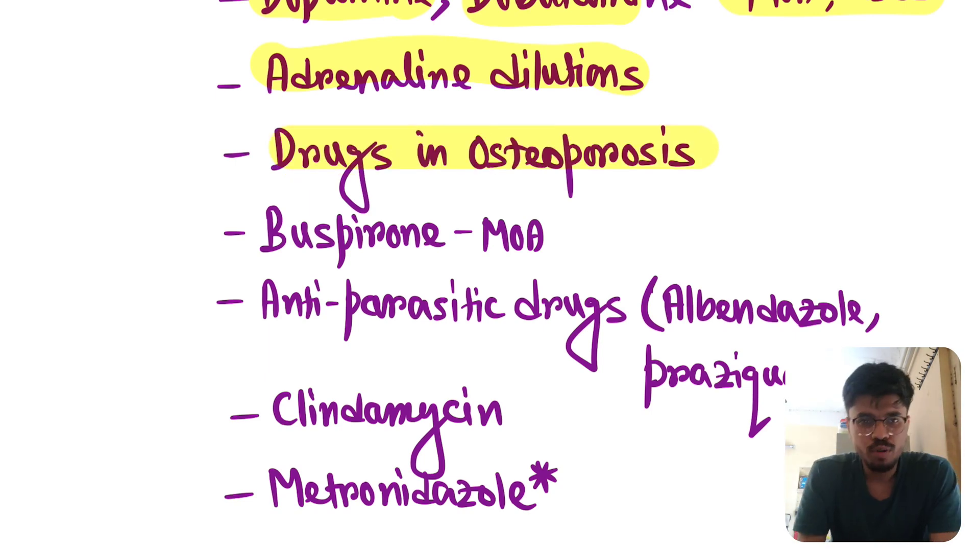Drugs in osteoporosis. Again, very very important topic. From pharma, you can get at least about bisphosphonate, mechanism of action, side effects. Please read all the drugs about osteoporosis. In orthopedics, there are already radiographic pictures. Fishman, Whittaker. Every year, the question is repeated. And from drugs, every year, bisphosphonate, mechanism of action, side effects repeated. Osteoporosis is very very important topic.